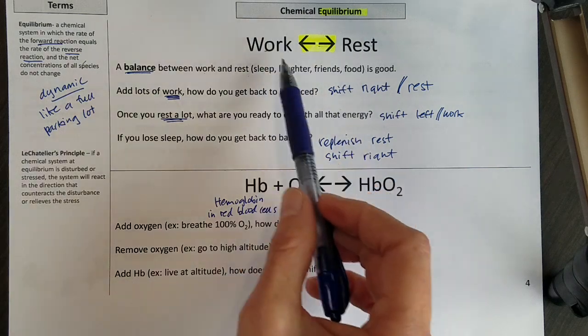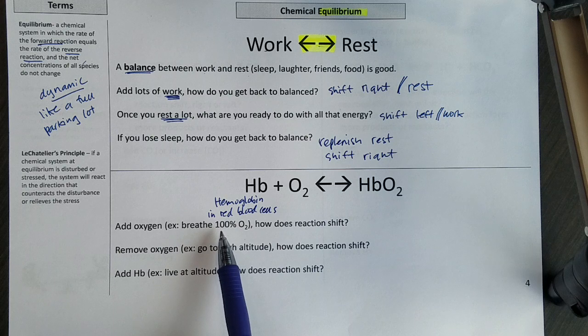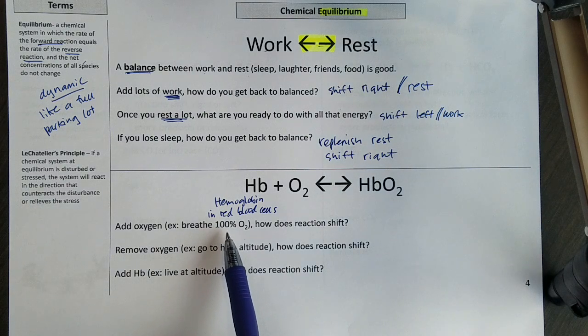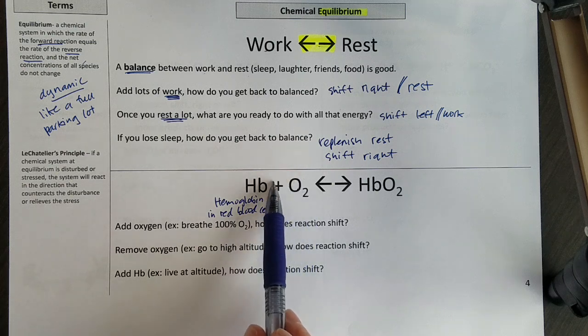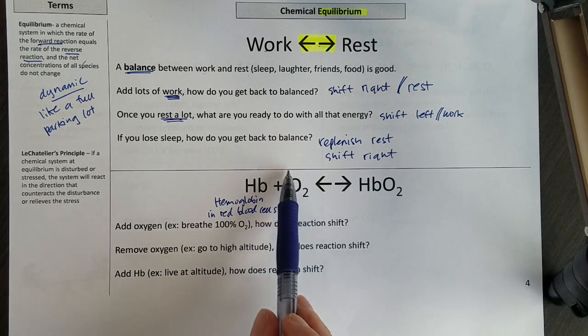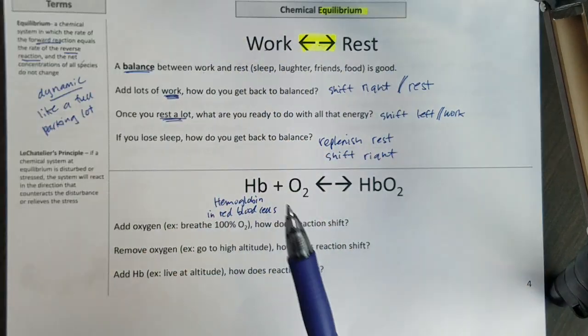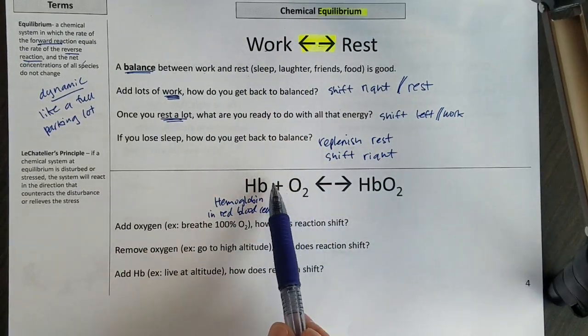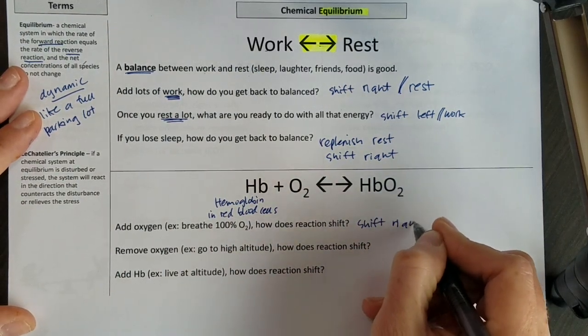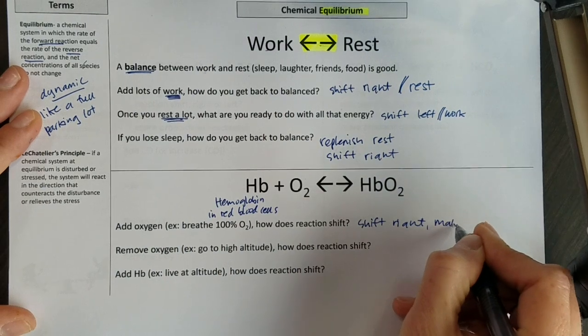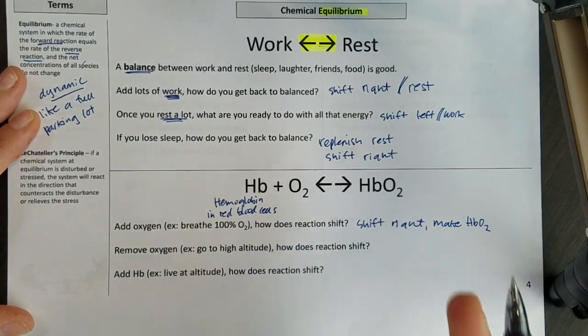So let's use our Le Chatelier's shifting idea. Let's say I add oxygen. So I start breathing in 100% oxygen instead of the 21% that's in the air right now. If I add oxygen, which way am I going to shift? Now I have too much over here. Too much work, I shifted right to rest. Too much oxygen, I'm going to shift over to the right. And as I shift right, I'm going to make more of that hemoglobin-oxygen complex.